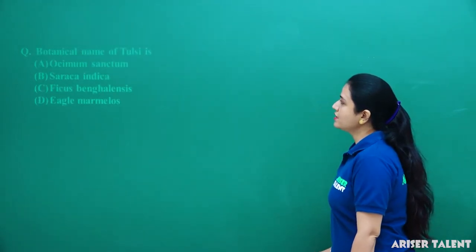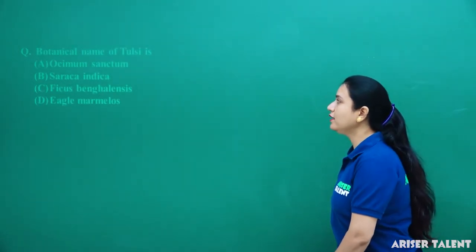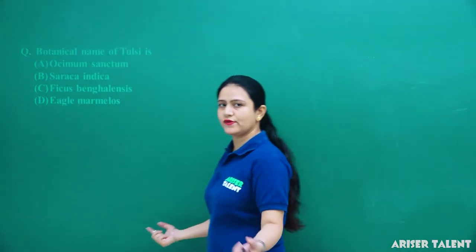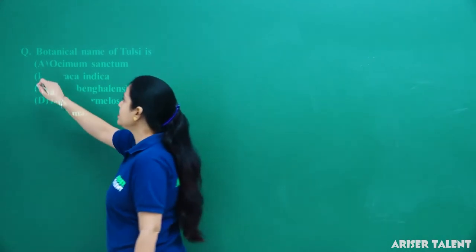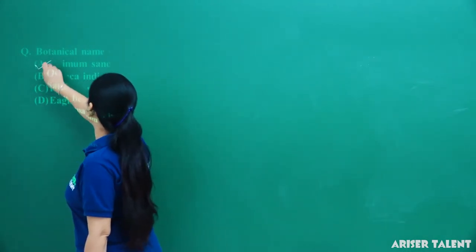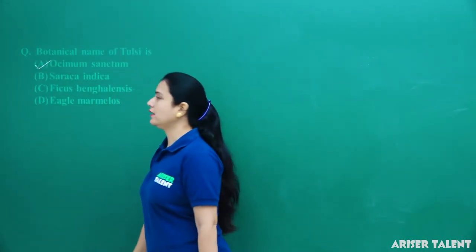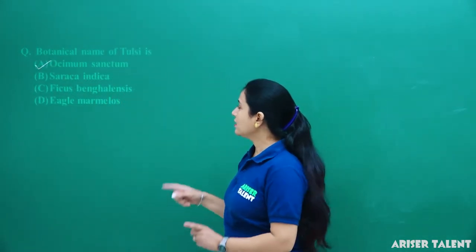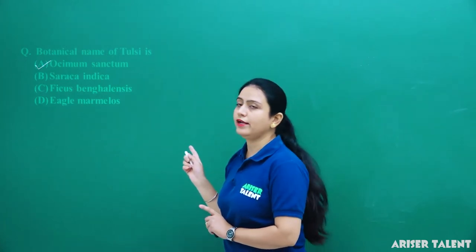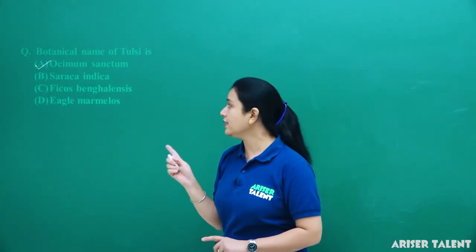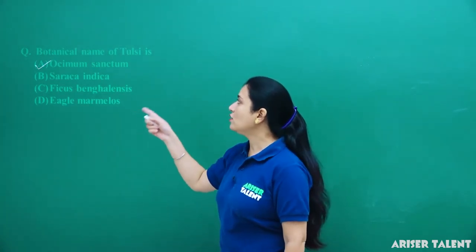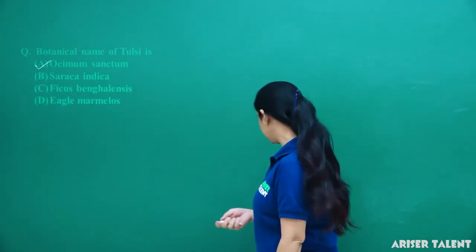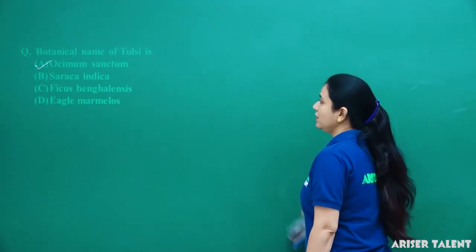Next, the botanical name of Tulsi is Ocimum sanctum. Once again, the botanical name of Tulsi is Ocimum sanctum. Option A is the correct answer.